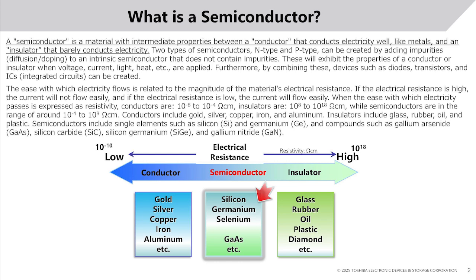Whether electricity flows is related to the magnitude of a material's electrical resistance. If resistance is high, current will not flow easily; if low, current will flow easily. When expressed as resistivity: conductors are 10⁻⁸ to 10⁻⁴ ohm·cm, insulators are 10⁸ to 10¹⁸ ohm·cm, and semiconductors fall in the range of around 10⁻⁴ to 10⁸ ohm·cm.